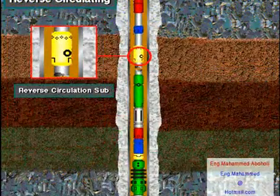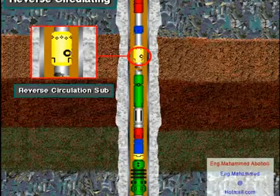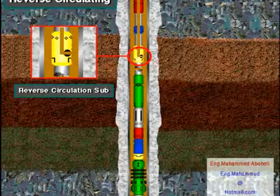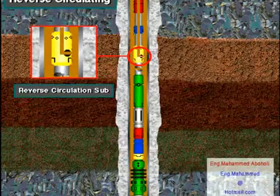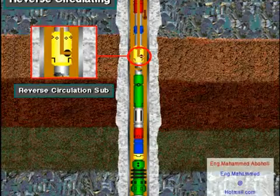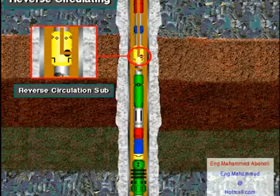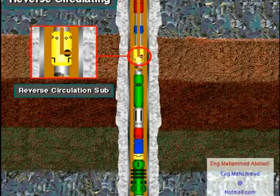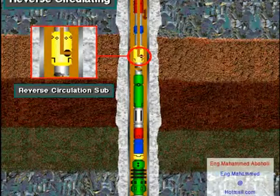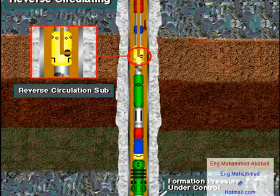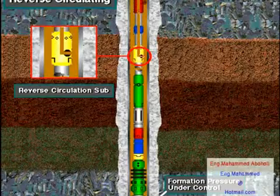To remove the DST tool from the hole, the driller first opens the reverse circulation sub. The driller usually opens the reverse circulation valve hydraulically by pumping drilling fluid down the annulus. This increased pressure in the annulus opens the sub. With the sub open, drilling fluid reverse circulates down the annulus and up the tool and drill string to the surface. Reverse circulation pumps the remaining formation fluids out of the drill stem and puts drilling fluid back in. The drilling fluid kills the well — that is, the drilling fluid once again keeps the formation pressure under control.